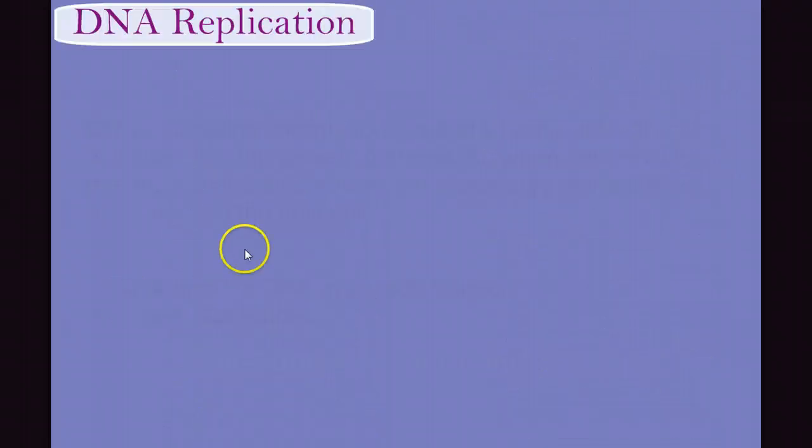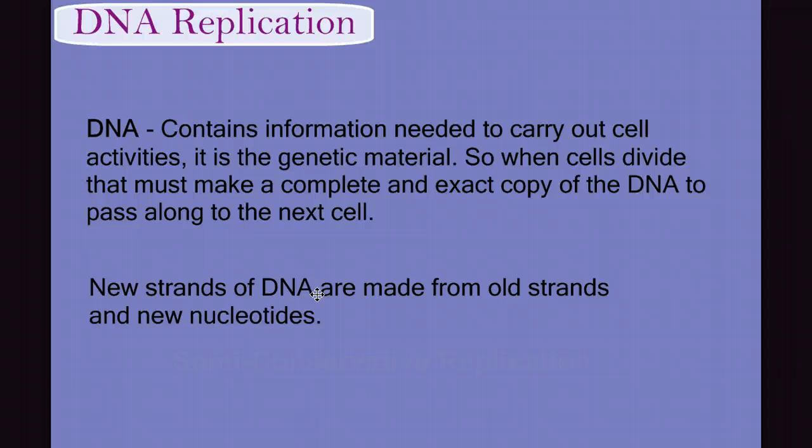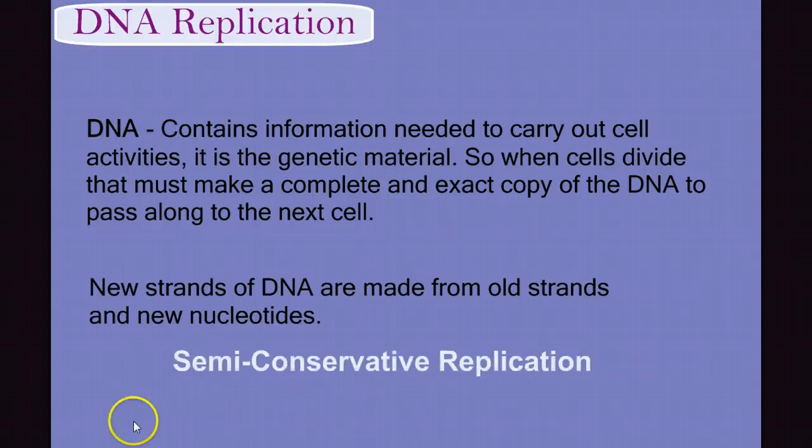We know that DNA is the genetic material, and that it directs cell activity. Therefore, it's very important that when the cell divides, that it pass along a complete and exact copy of these instructions to the next generation of cells. To ensure that this happens, the new molecules of DNA are made from the old molecules, using each strand of DNA as a template in a process called semi-conservative replication.